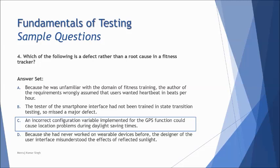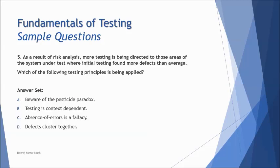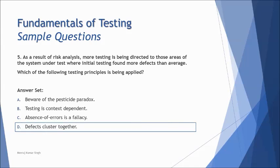So C is the right answer. At this case, number five: as a result of risk analysis, more testing is being directed to those areas of the system under test where initial testing found more defects than average. So we are talking about defect density here. Which of the following testing principles is being applied? Beware of pesticide paradox, testing is context dependent, absence of error is a fallacy, defect cluster together. So I think all of you would have got it by now. It's a straightforward thing that defect clustering is what is being discussed here, that generally if you found some defects and we are looking forward to have more defects than average, then we say this concept that there are defects which have clustered together. But pesticide paradox deals with repetition, context dependent means about strategy, absence of error means about meeting the requirements.